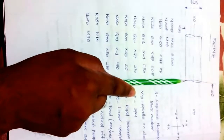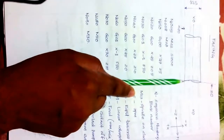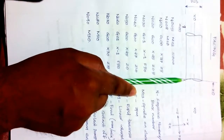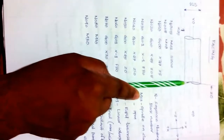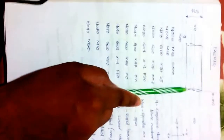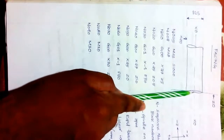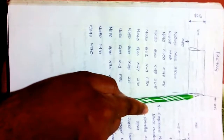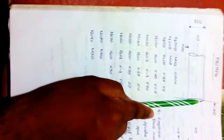N060: G01 X-1 F50 — feed rate 50 millimeters per minute. The material used here is aluminum, and for aluminum the feed rate is 50 mm/min. The tool moves from this point toward X-1. Because the workpiece is rotating continuously, the facing operation is performed on both sides. The centerline is X0, and X-1 is just beyond it, so this entire surface is now faced.